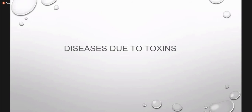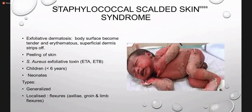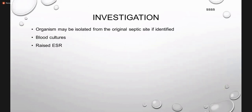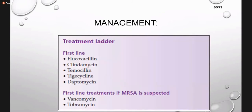Now the diseases due to toxins. Number one is staphylococcal scalded skin syndrome — a toxin-mediated infection caused by the exfoliative toxin of S. aureus, mostly involving neonates and children. There is exfoliation and peeling of the skin; the skin becomes tender and erythematous, and the whole superficial epidermis or some part of the dermis is stripped off. It can be generalized or localized and is usually associated with fever. Organisms are identified from the original septic site if identified; otherwise blood cultures are mandatory. Oral antibiotics are always used.